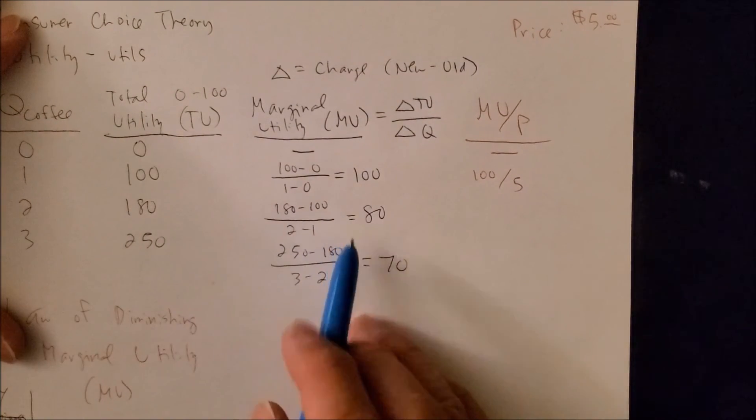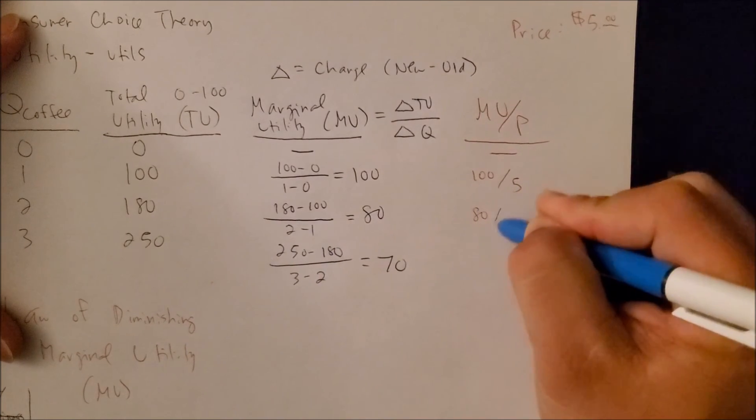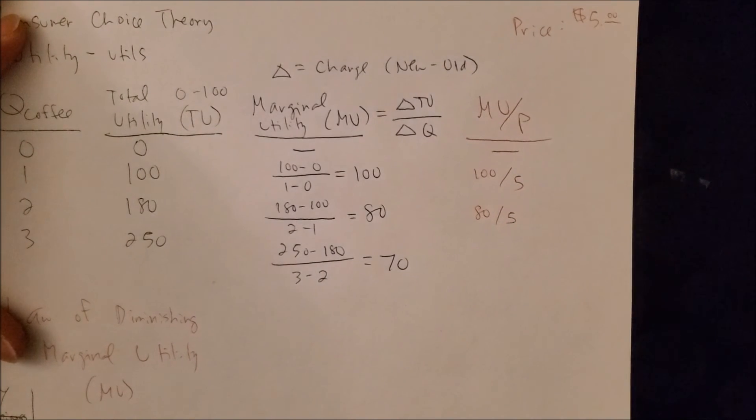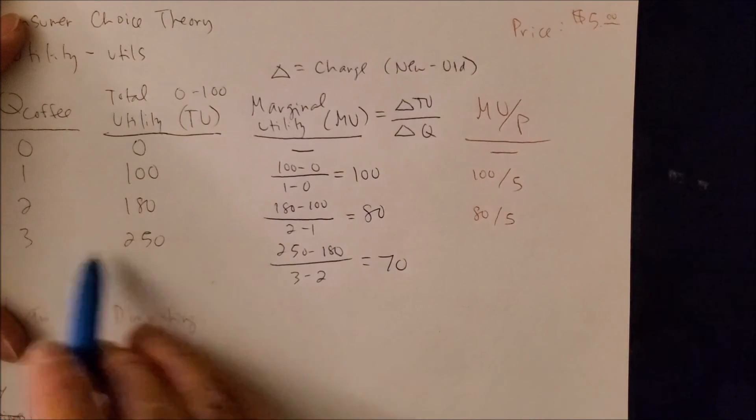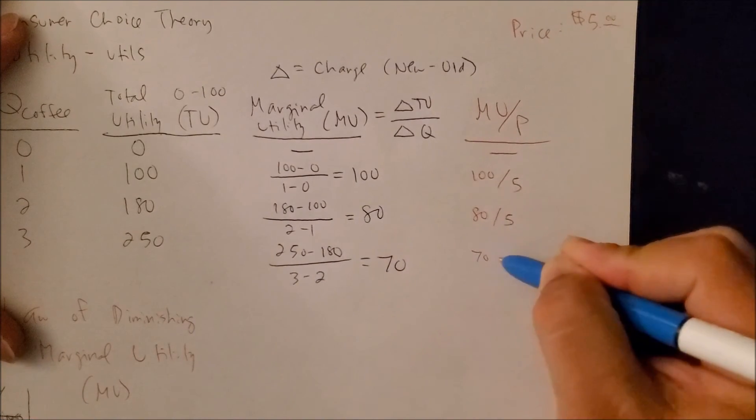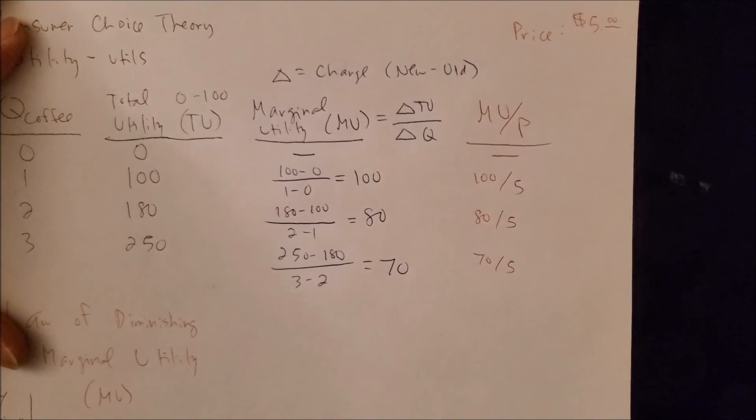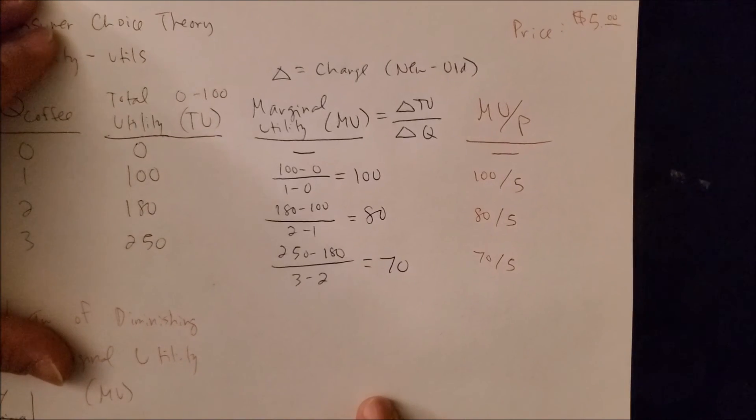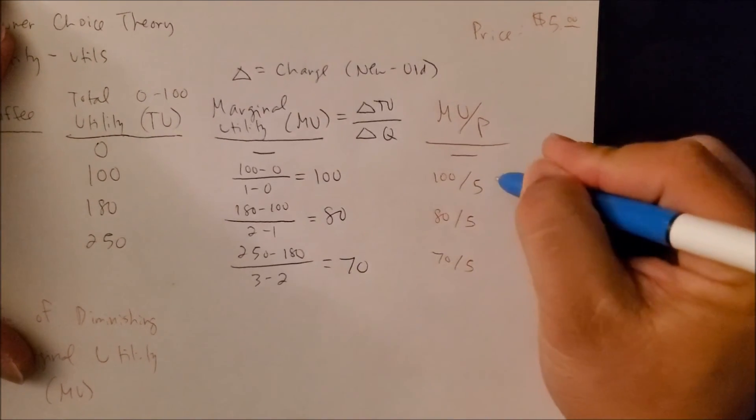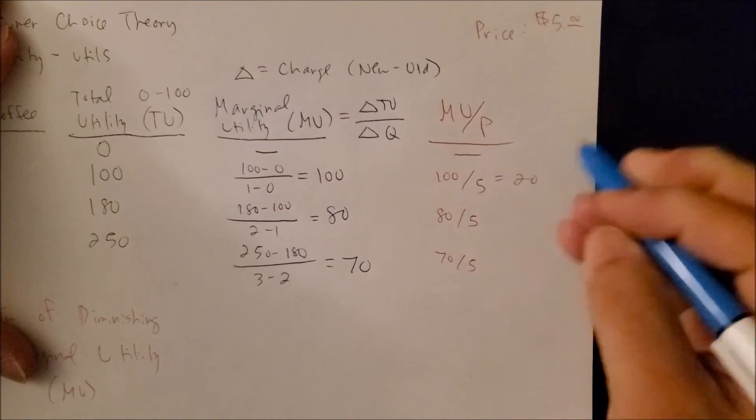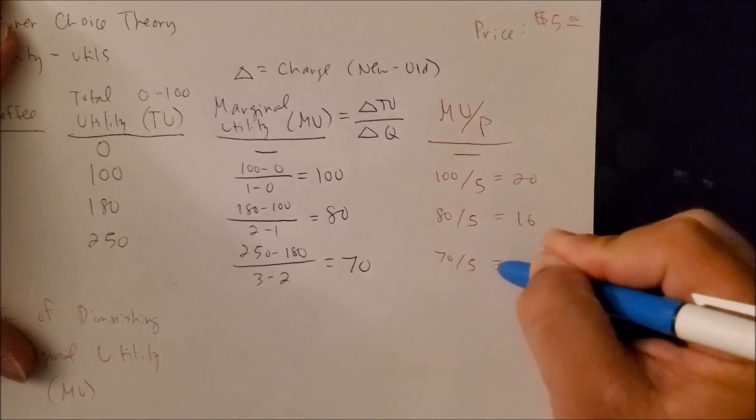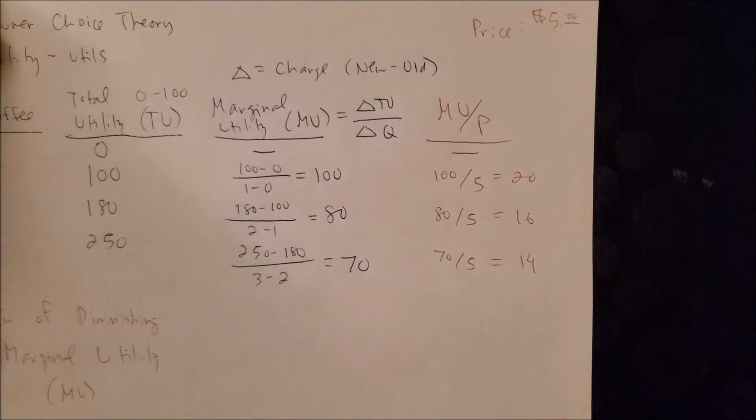For two cups of coffee, it's going to be 80 over five dollars. And for three cups of coffee, it's going to be 70 over five dollars. And once we know what the MU over P is, we can now see that we're bound to have our MU still decreasing once price is known.